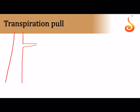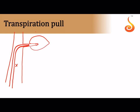The xylem extends as a continuous tube throughout the plant from root to leaf. In a cross-section of the leaf, you can see the xylem tissue surrounded by other tissues, with the continuous water column extending through it. Transpiration at the leaf end pulls the entire water column upward through this xylem tube.